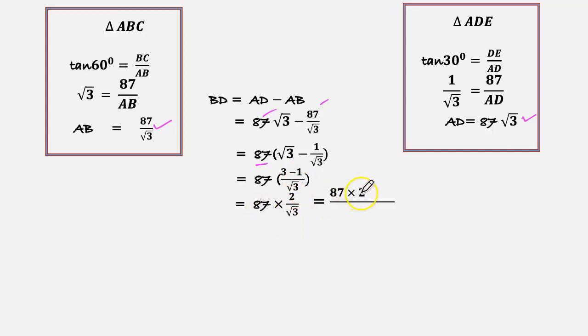So 87 into 2 into √3 by √3 into √3. Multiplying √3 numerator and denominator.